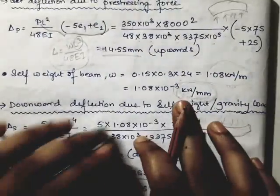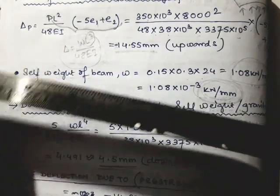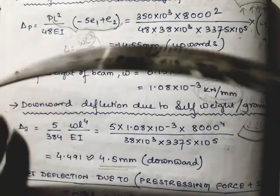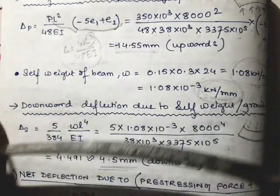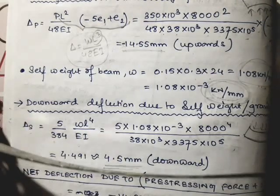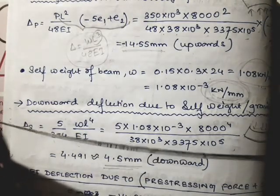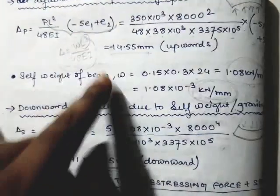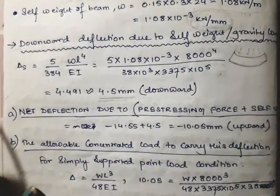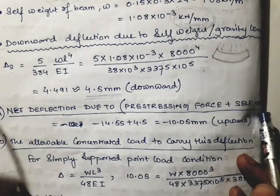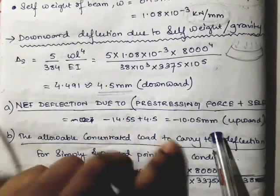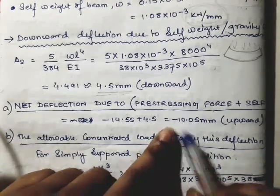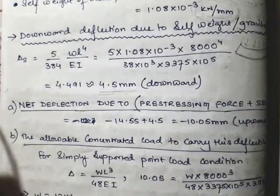So we have evaluated that the upward deflection due to pre-stressing force is 14.55 mm, and the downward deflection due to self weight is 4.5 mm. The deflection due to self weight is considerably less than that from the pre-stressing force. Therefore, the net deflection is minus 14.55 mm plus 4.5 mm, which equals minus 10.05 mm — still an upward deflection.